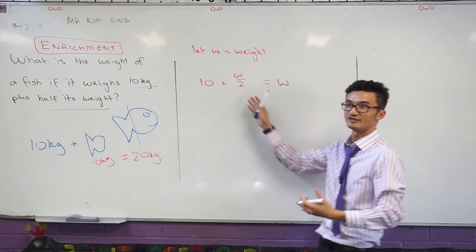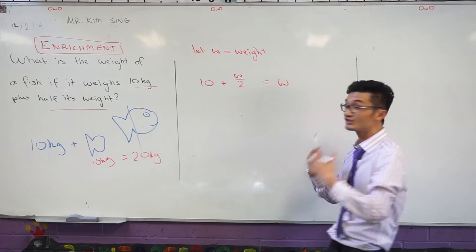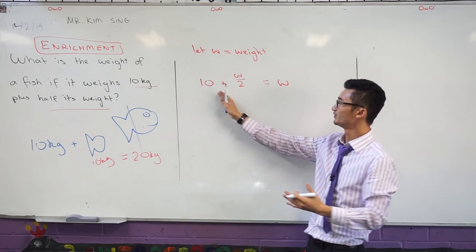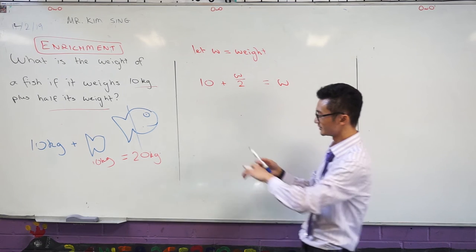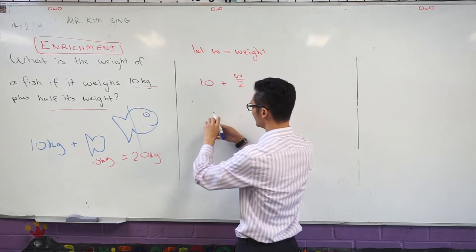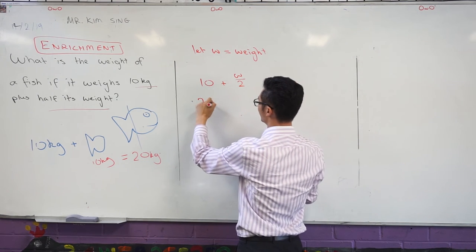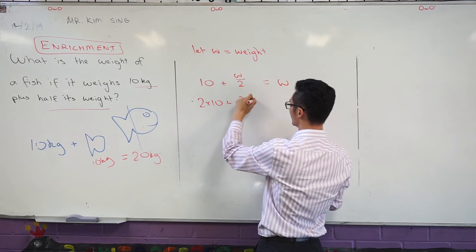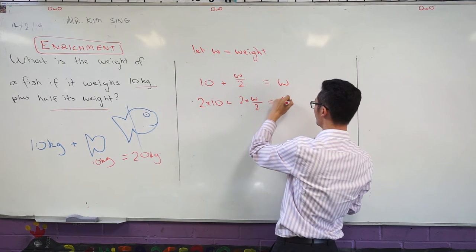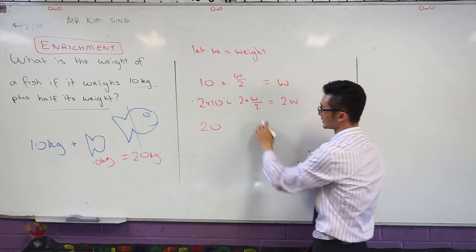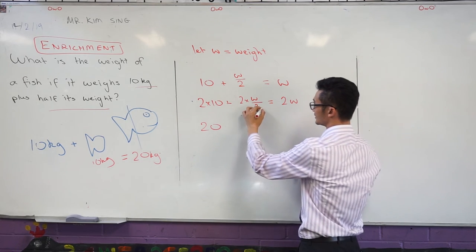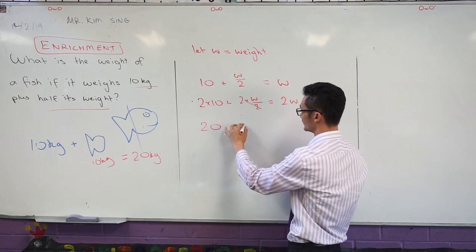Because with fractions if I'm trying to solve for an equation, I usually don't want those there. So I multiply by 2 to get rid of that. Now when I multiply by 2, I have to multiply every term by 2, right? So I'm saying, okay, I've got 2 times 10 plus 2 times w over 2 equals to 2w. 2 times 10, that's just 20. Now because I have 2 times w over 2, these are just going to divide through and that would leave me with w as well.